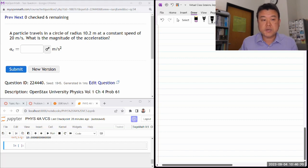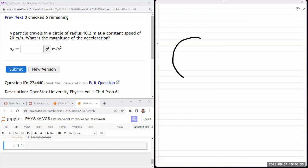This question says a particle travels in a circle of some radius. We are given the radius at a constant speed, we are given some constant speed of 20 meters per second. What is the magnitude of the acceleration?